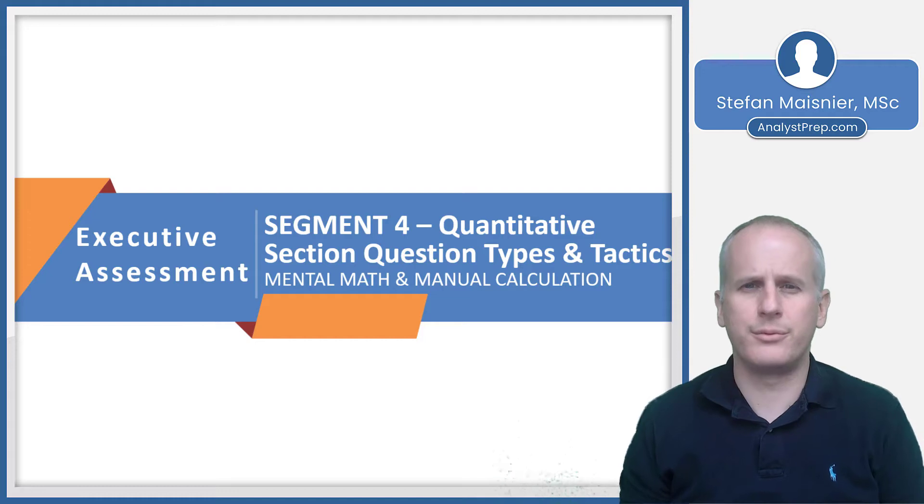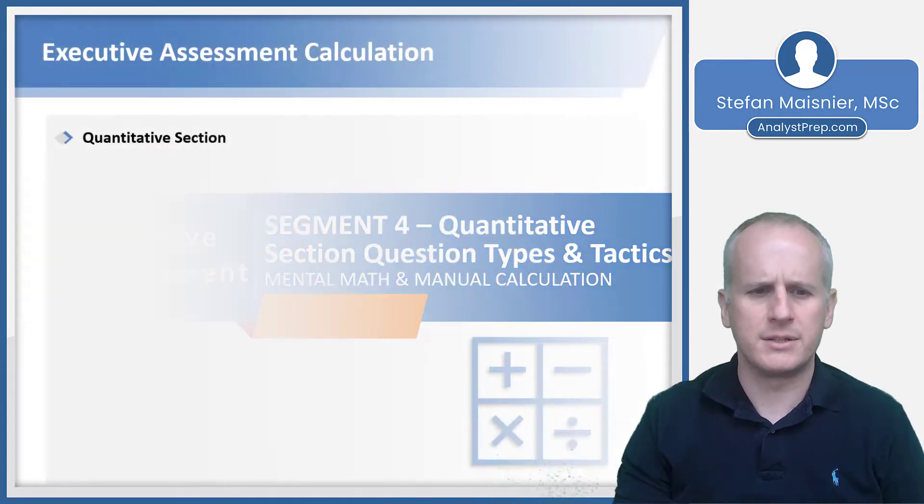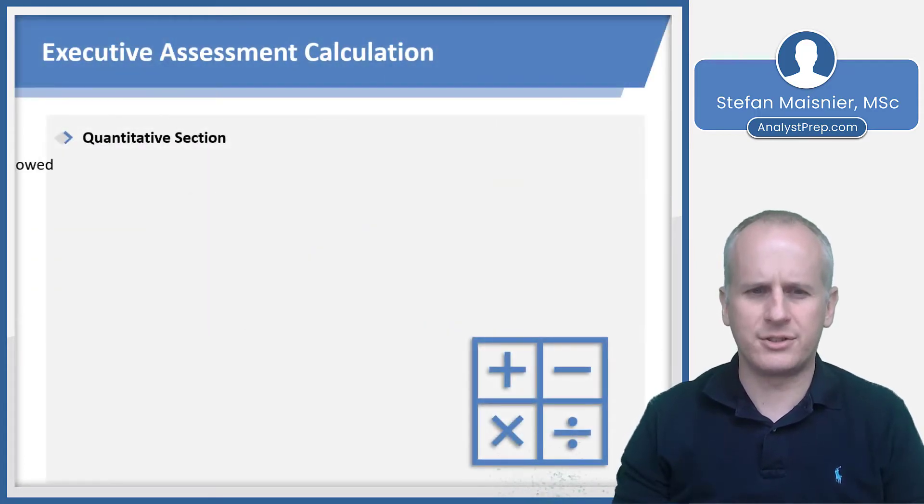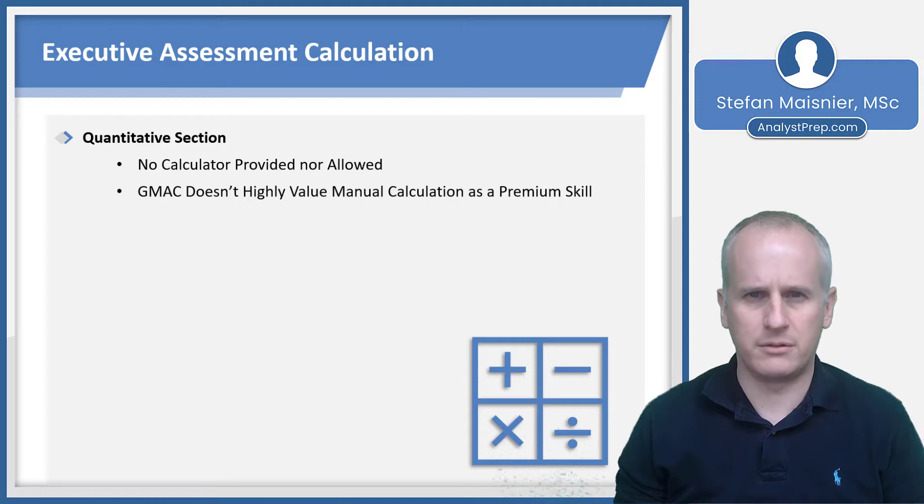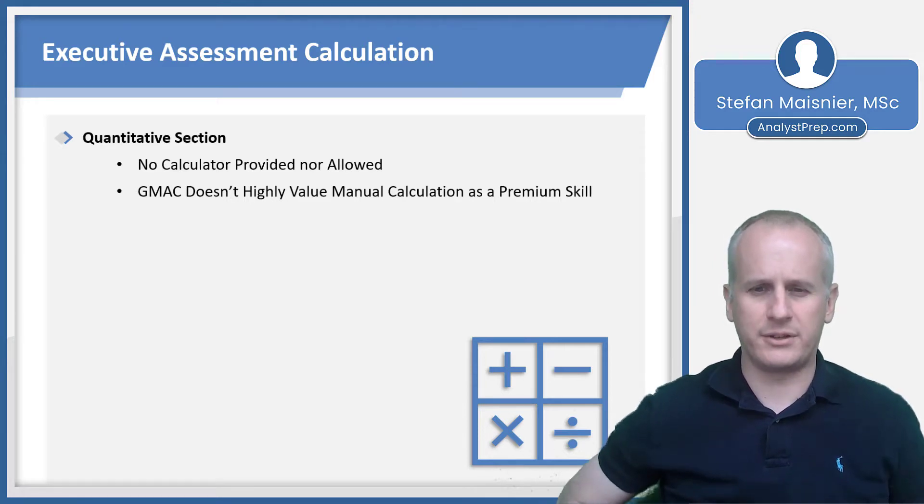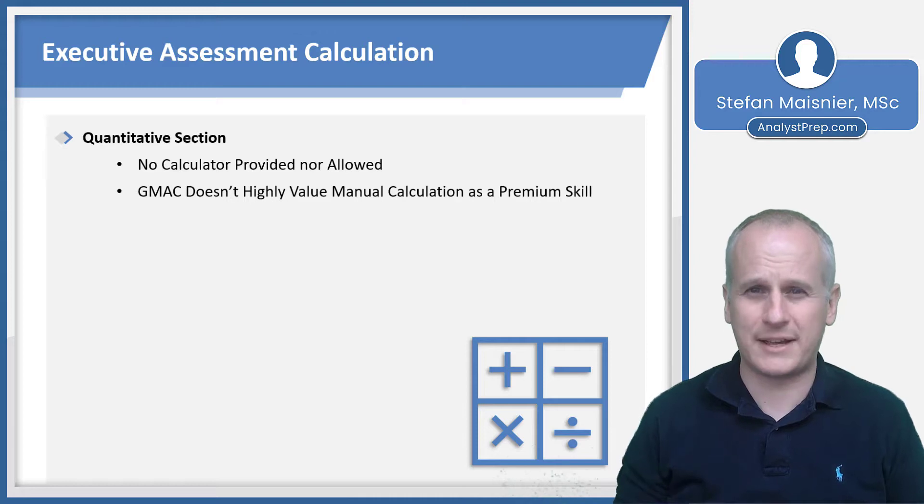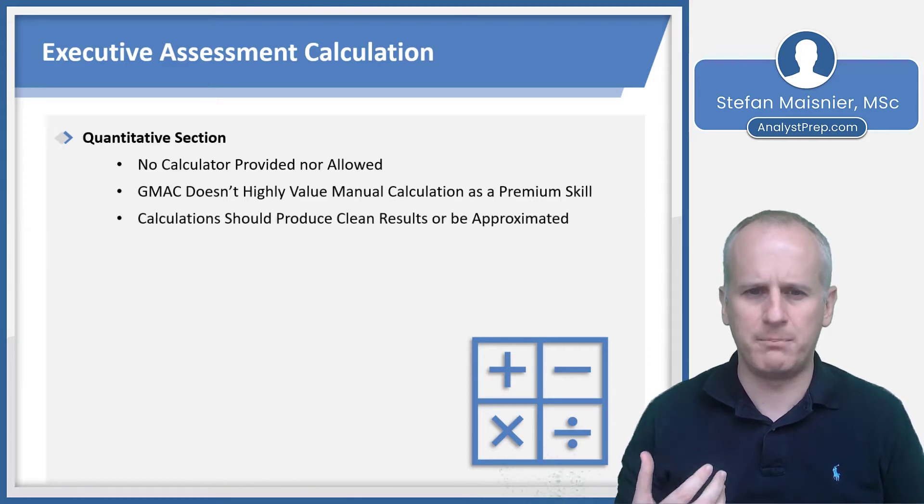In this lesson, we'll go through some mental math and manual calculation skills that you'll need to excel on the executive assessment exam. The quantitative section for the executive assessment does not provide a calculator, so you're going to have to manually calculate to solve those problems. However, the GMAC, the people who put forth the executive assessment, they don't highly value manual calculation as a premium skill.